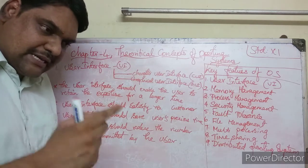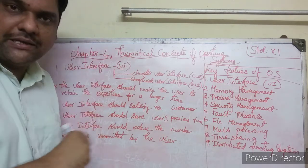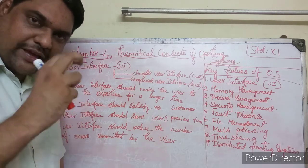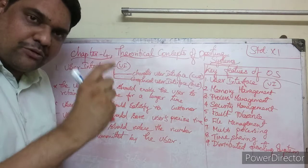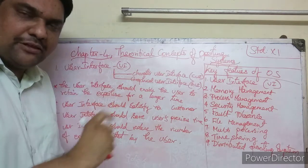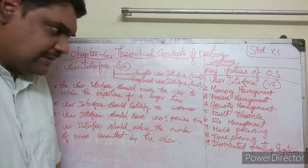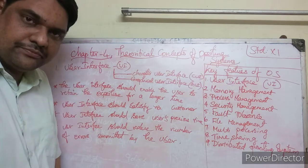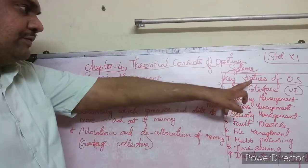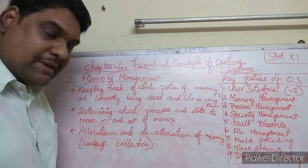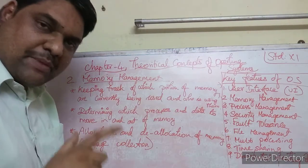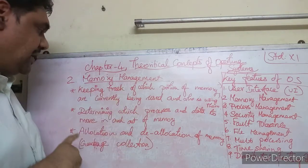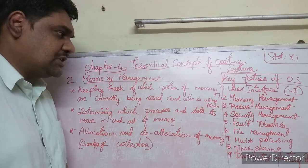These are the topics related to the user interface — the first key feature of the operating system. The second key feature is memory management. Memory management tracks which portion of memory is currently being used and who is using it.